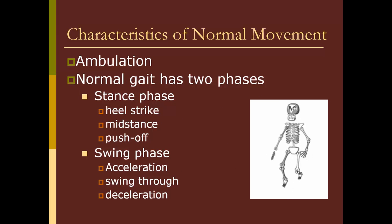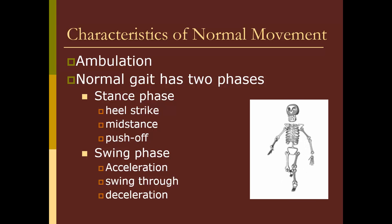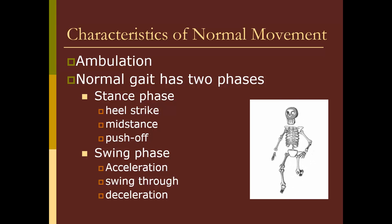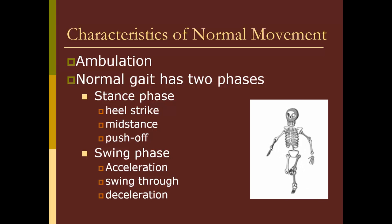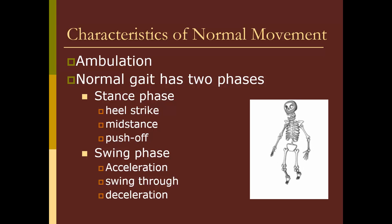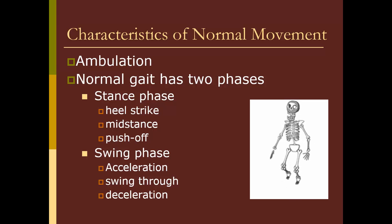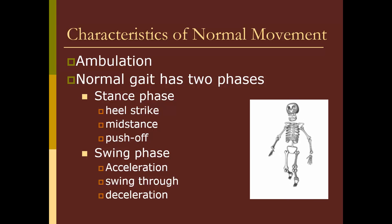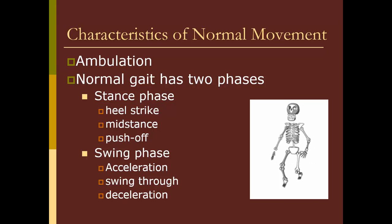Another important aspect of mobility is ambulation or walking. Walking is actually a fairly complex activity — it requires the coordination of a lot of muscles, along with equilibrium, balance, and proper posture. Watching a toddler learn to walk gives you a sense of all the work involved in coordinating all the different muscles. When we look at how somebody walks, we refer to that as their gait. The normal gait has two phases: a stance phase that includes a heel strike, mid stance, and push off; and an overlapping swing phase with acceleration, swing through, and deceleration. I've posted a short YouTube video that demonstrates different types of gaits.